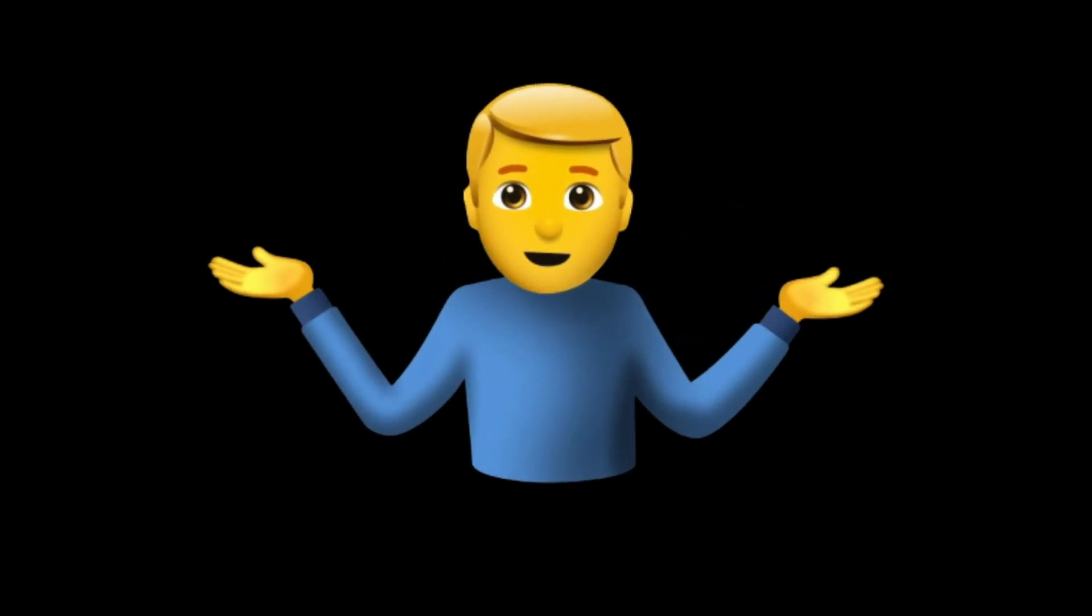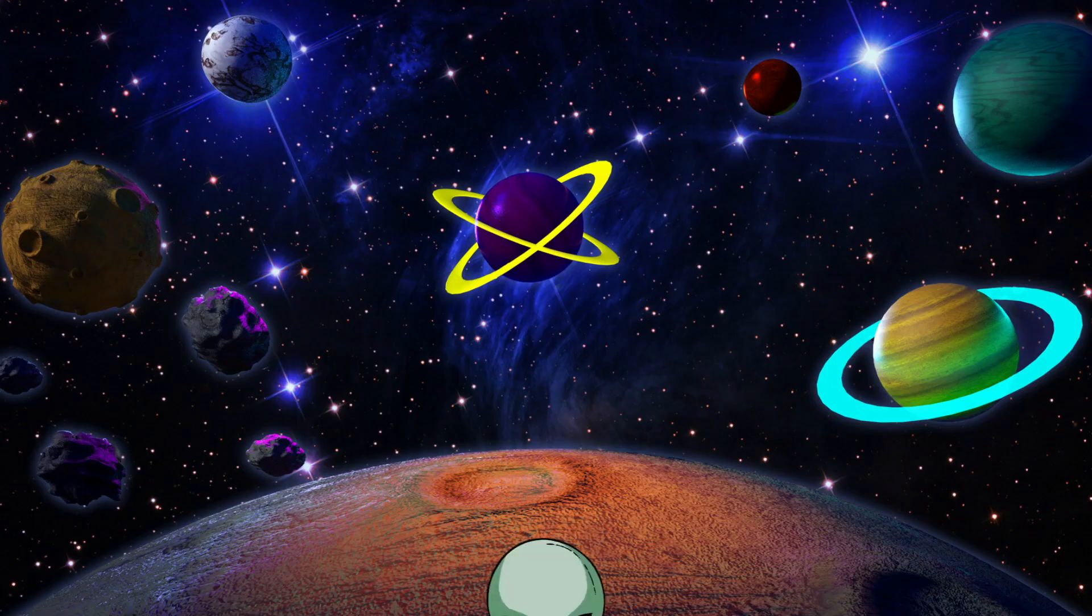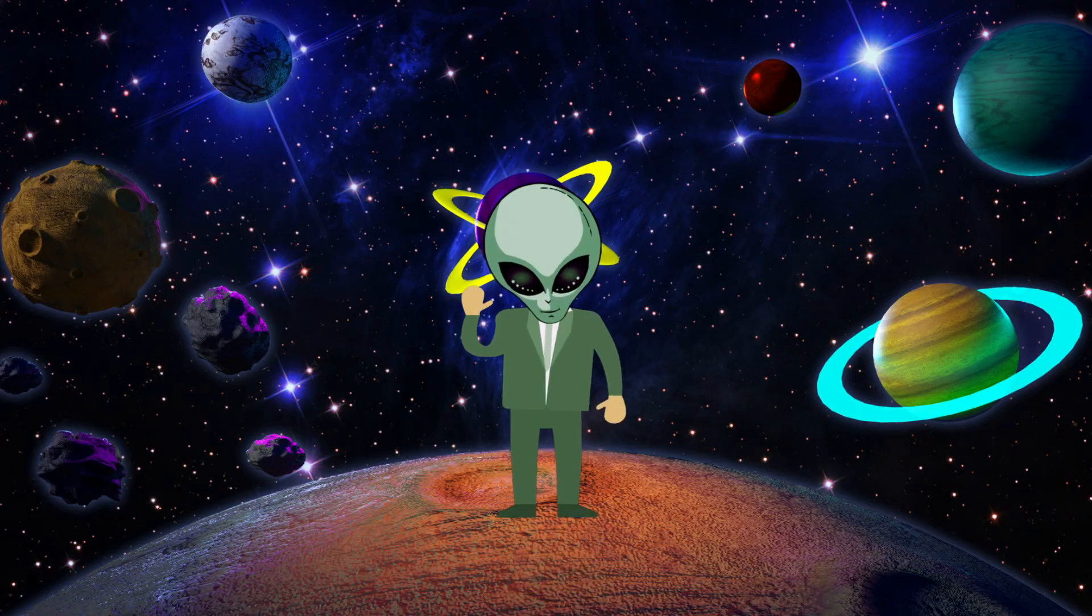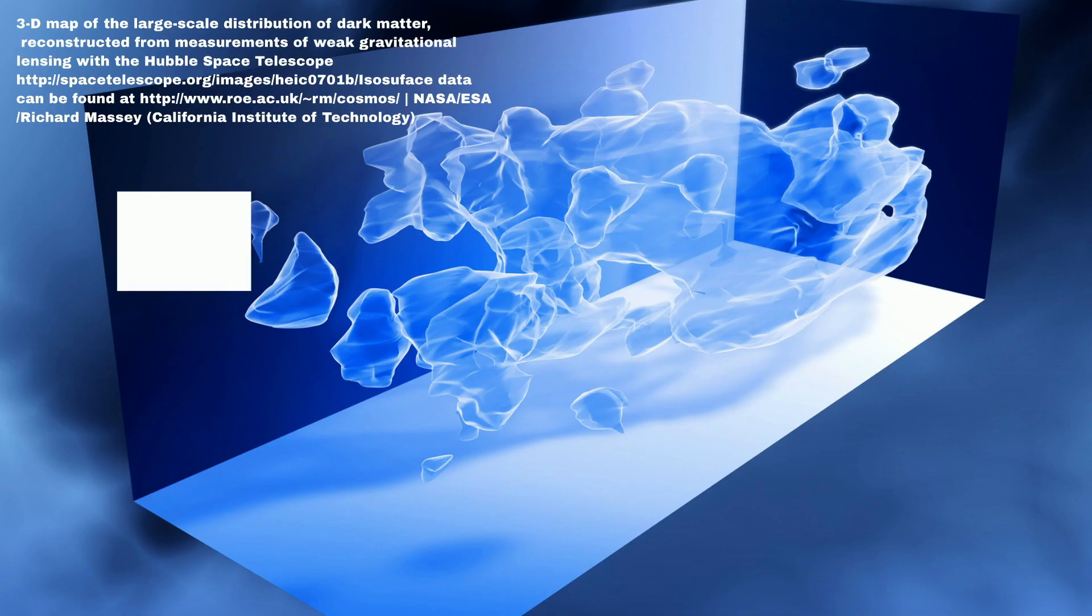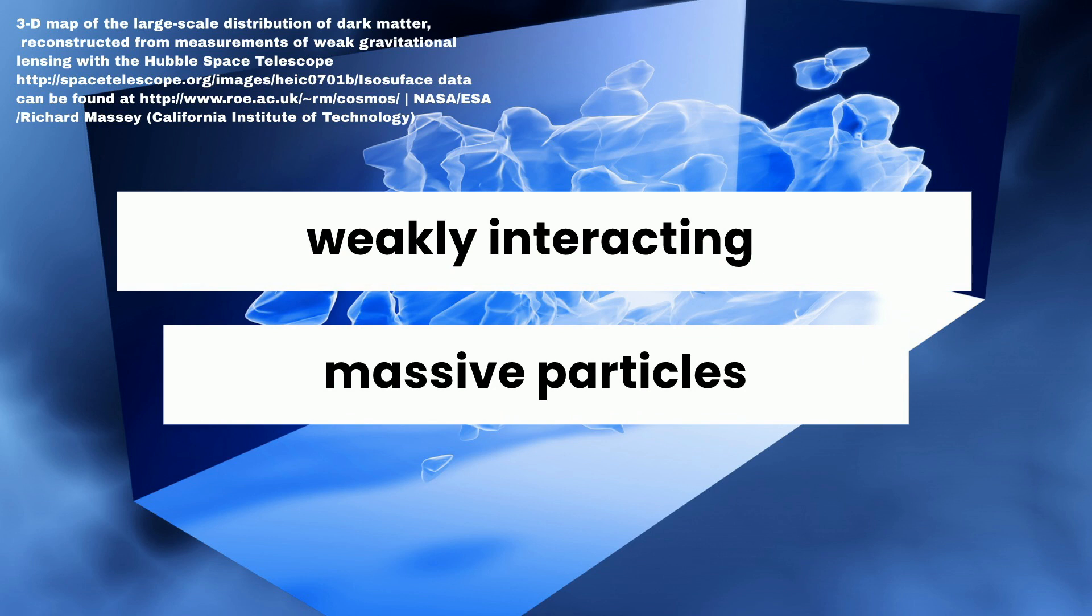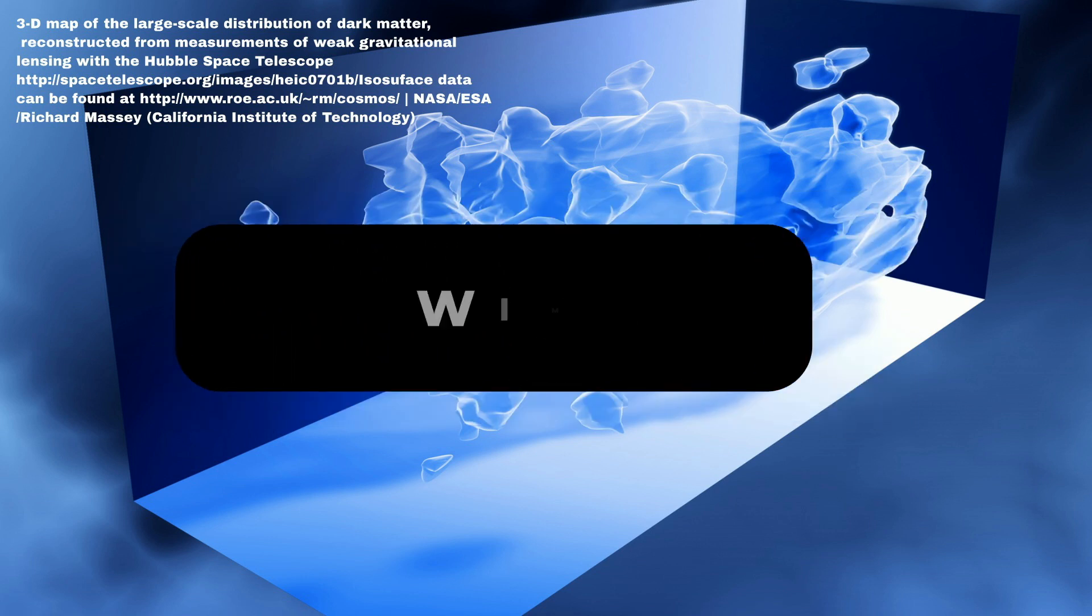We still don't know what dark matter is made of, but there are a number of theories. One possibility is that it is made up of weakly interacting massive particles, known as WIMPs.